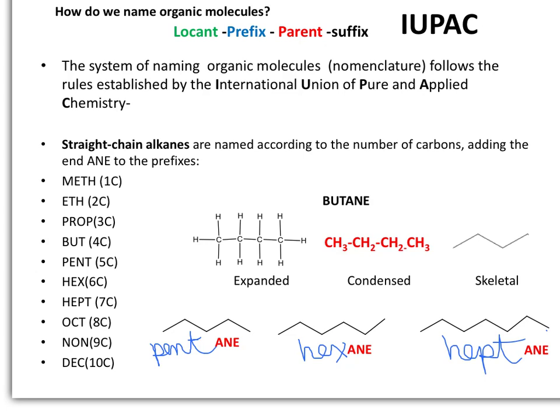According to IUPAC, a name will have a suffix that indicates the major or principal functional group. You will also have a parent or root that determines how many carbons are present in the molecule, or how long the hydrocarbon chain is. You will also have a prefix determining the position of substituents or alkyl groups present, and a locant determining where the primary functional group is present.